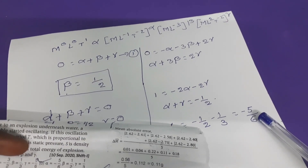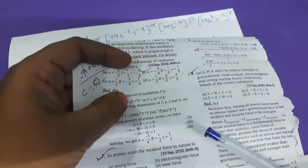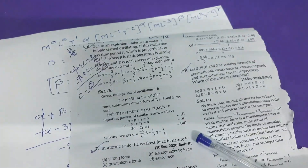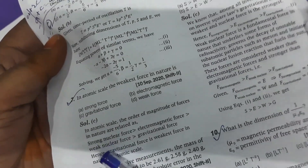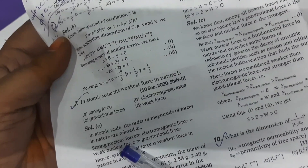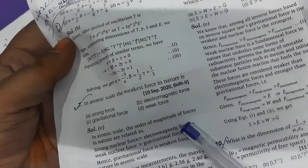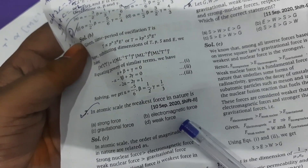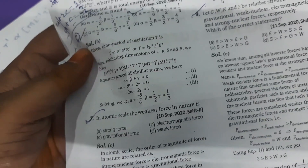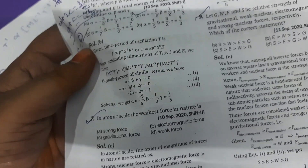You can follow the units and measurements part 1 for more explanation on this type of problem. The seventh question: in atomic scale, what is the weakest force in nature? In atomic scale, the order is: strong nuclear force > electromagnetic force > weak nuclear force > gravitational force. So the weakest force is gravitational force — option C is the right answer.